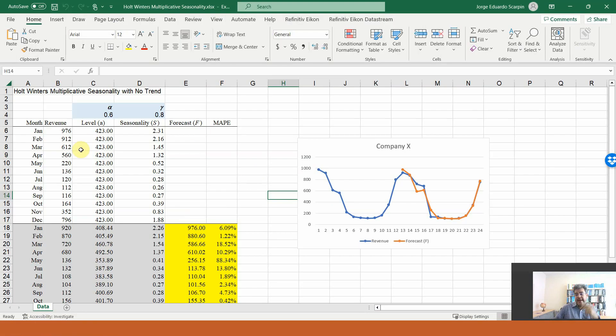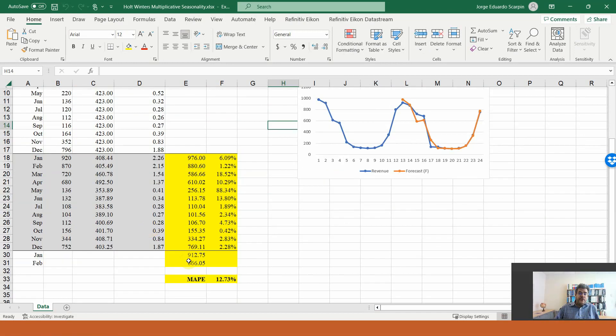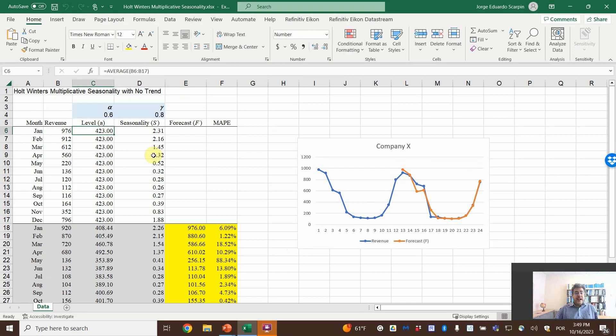So company X has two-year revenue here, and we want to forecast the next two months. The level for the first year is the average of the first year, the same number for all of first year. And seasonality is revenue divided by level. That is seasonality for the first year.